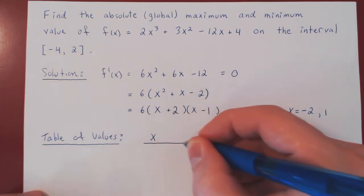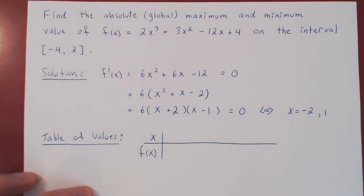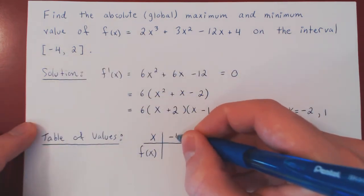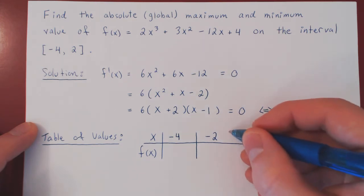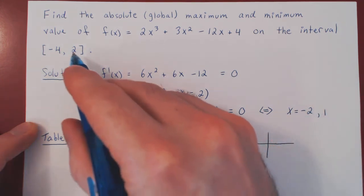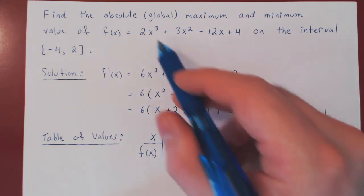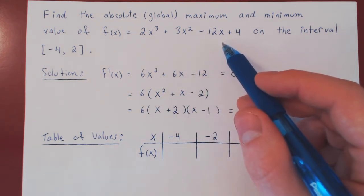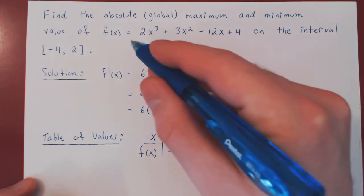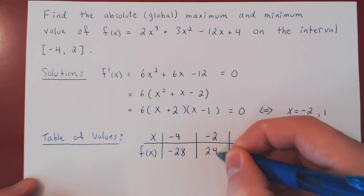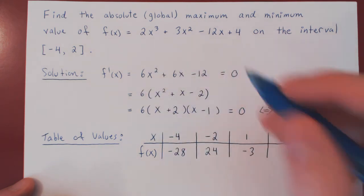We have four x values: the left endpoint negative 4, our first critical point negative 2, our second critical point positive 1, and finally the right endpoint 2. Plugging in: f of negative 4 is negative 28; f of negative 2 is positive 24; f of 1 is negative 3; and f of 2 is positive 8.